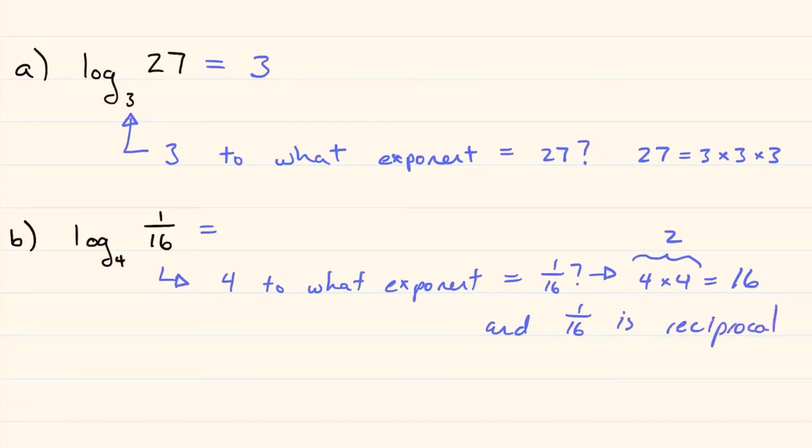And 1/16th is a reciprocal. So that means it must have been a negative exponent. So just combine those. So it's negative 2. 4 to the power of negative 2 is 1/16th. And those are the two solutions for a and b.